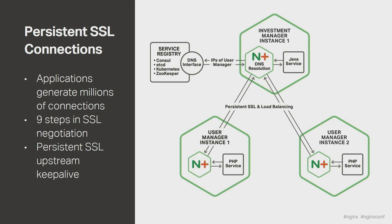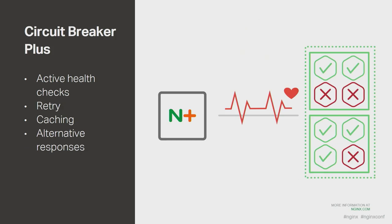Here's where the real benefit comes in: the stateful, persistent, encrypted connections between the microservices. NGINX will pre-establish the connection between microservices and, using keep-alive functionality, keep that connection persistent between calls so that you don't have to do the SSL negotiation process for each request. Essentially, we're creating mini VPN connections from service to service. In our initial testing, we found a 77% increase in connection speed. You also get the ability to use the circuit breaker pattern — you define an active health check and set up caching so you can retain data in case a service becomes unavailable.